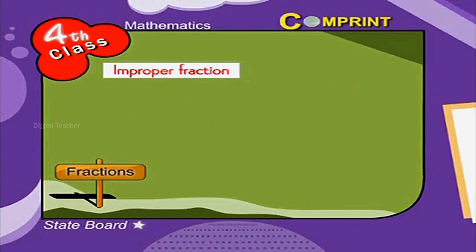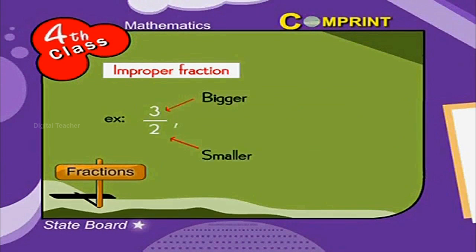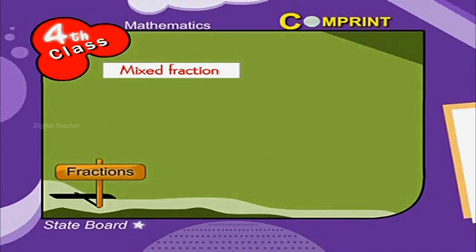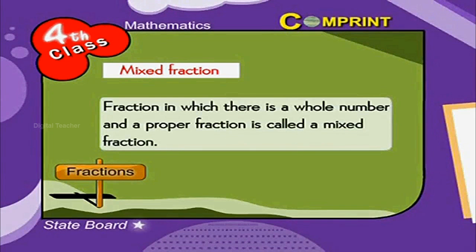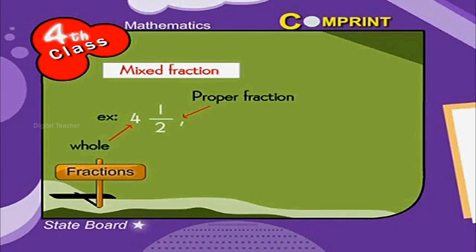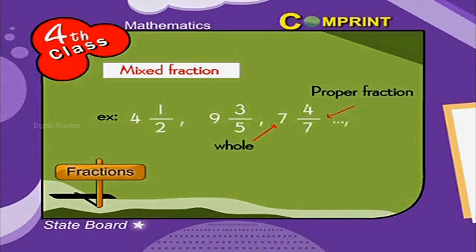Improper fraction: A fraction in which the numerator is greater than or equal to the denominator is called an improper fraction. For example, 3 by 2, 3 by 3, and so on. Mixed fraction: A fraction in which there is a whole number and a proper fraction is called a mixed fraction. For example, 4 and 1 by 2, 9 and 3 by 5, 7 and 4 by 7, and so on.